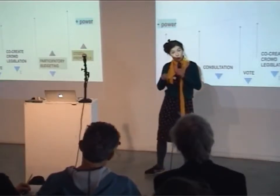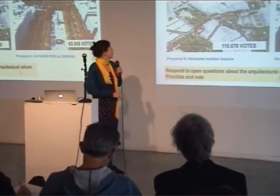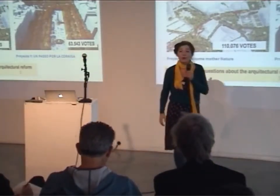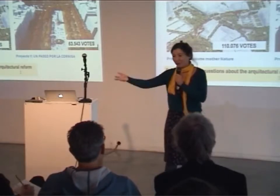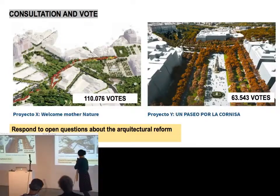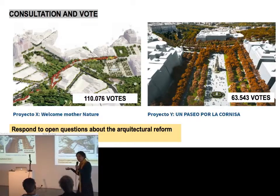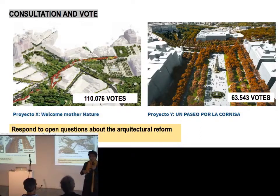Citizens have the power to propose policies and propose changes. Starting from the tool that gives less power to citizens, you have the consultation and vote tool. For example, the City Hall asked citizens of Madrid if they were willing to reform one of the most iconic squares — the Plaza España. They said yes, and then on the platform they chose which type of reform they wanted.